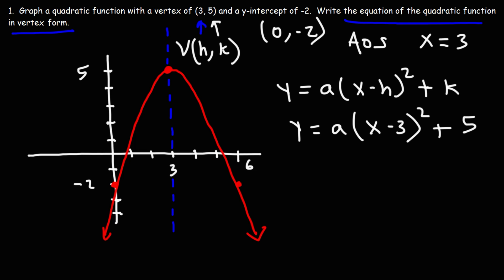Now all we need to finish writing this equation is the value of a. So that's where the y-intercept comes in. We're going to use this point to calculate the value of a. So we can see that x is 0, y is negative 2. So let's replace y with negative 2 and x with 0. And let's solve for a.